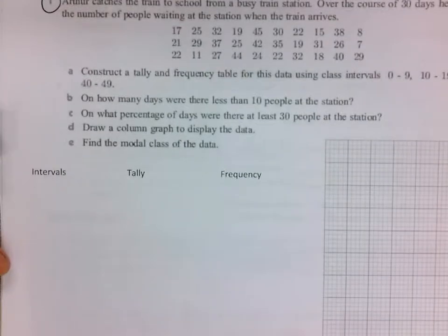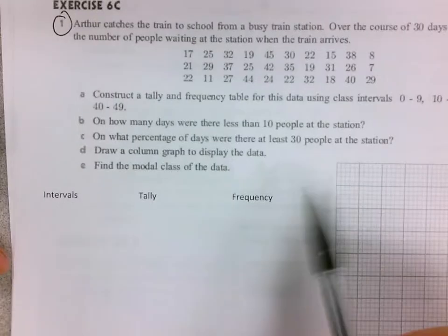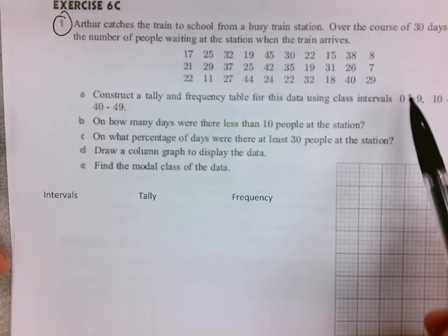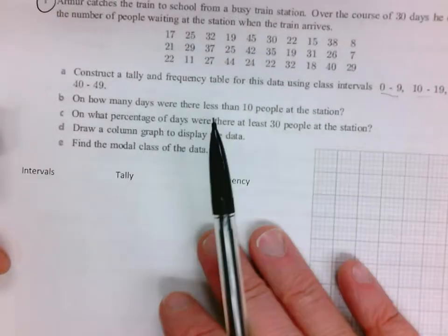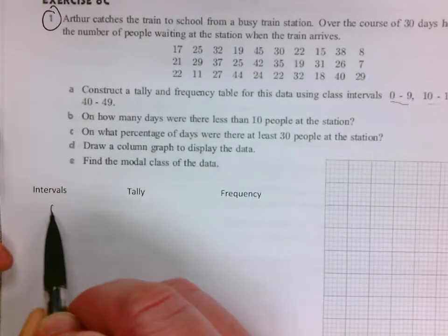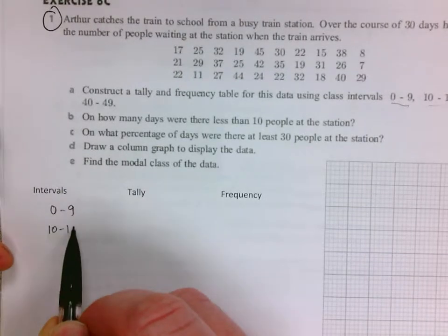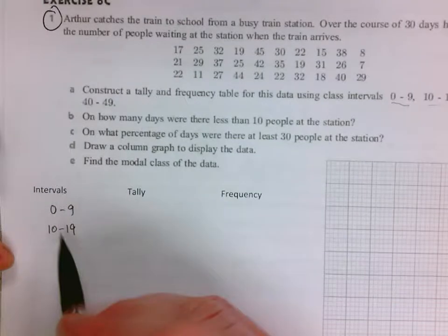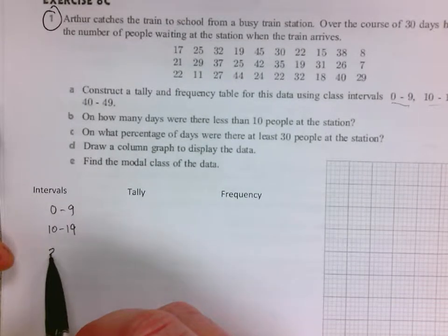So this is 6C number one on the second page here. You're supposed to make a frequency table using intervals. The fastest way with this small amount of data would just be to go ahead and list your data intervals. It's discrete data, the number of people waiting for the station, so we don't have to worry about decimals.